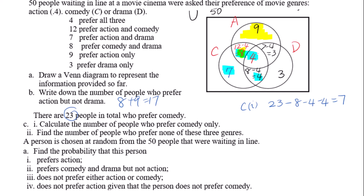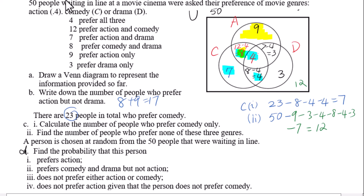For part c2, find the number of people who prefer none of these 3 genres. We will use 50 minus each number in the different set regions to get the people who prefer none of the 3 genres.